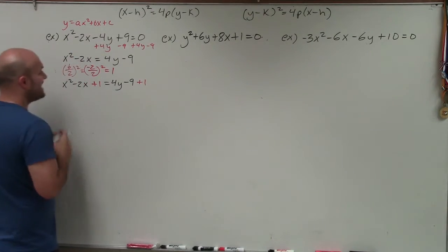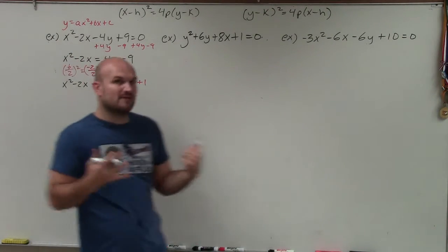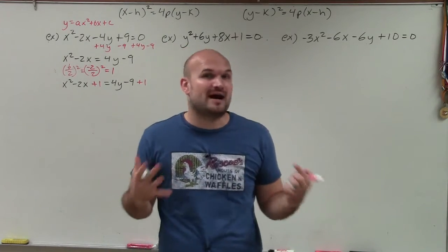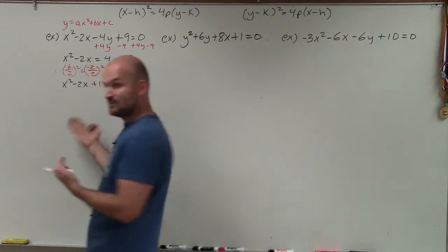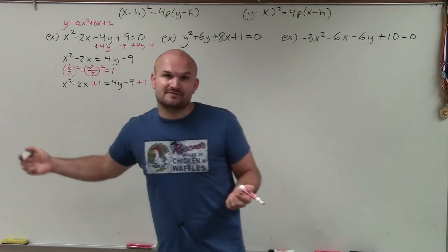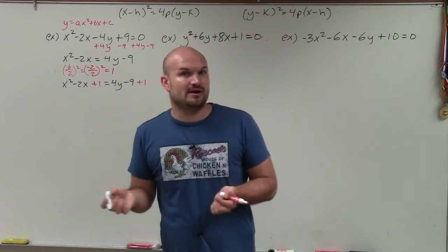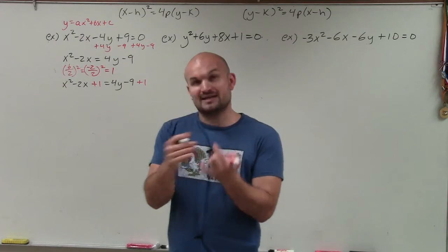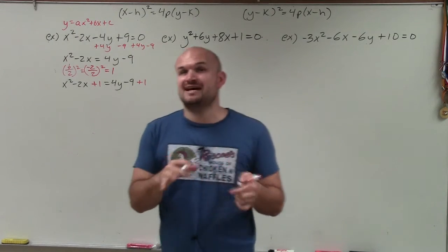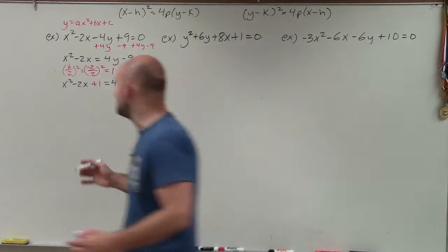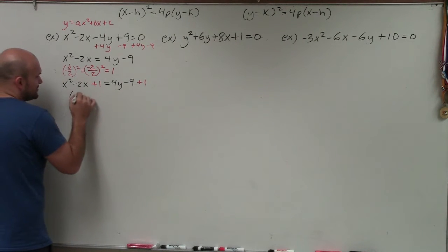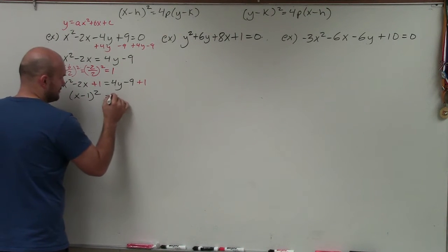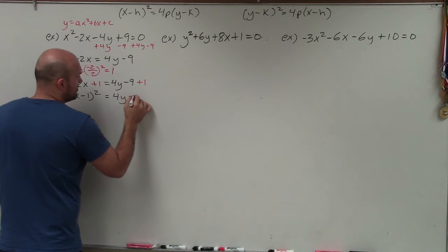I've now created a perfect square trinomial. Perfect square trinomials factor down to binomial squares. What two numbers multiply to give 1 and add to give negative 2? That's negative 1 and negative 1, meaning we can write this as (x − 1)(x − 1), which is the same as (x − 1)² = 4y − 8.